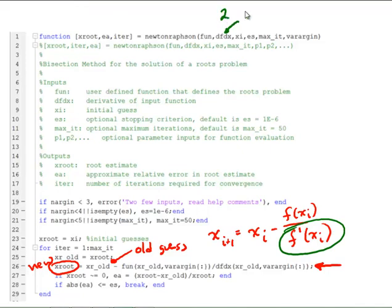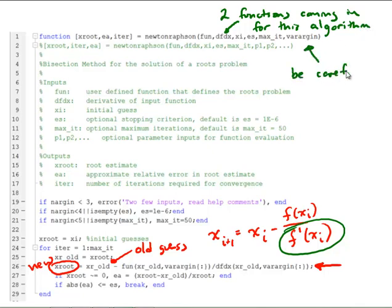Another difference here is we need f prime and we bring that in as the second input. So we have actually two functions coming in here for this algorithm, not just one. A key thing you need to be careful of is you need to be careful with parameters here.